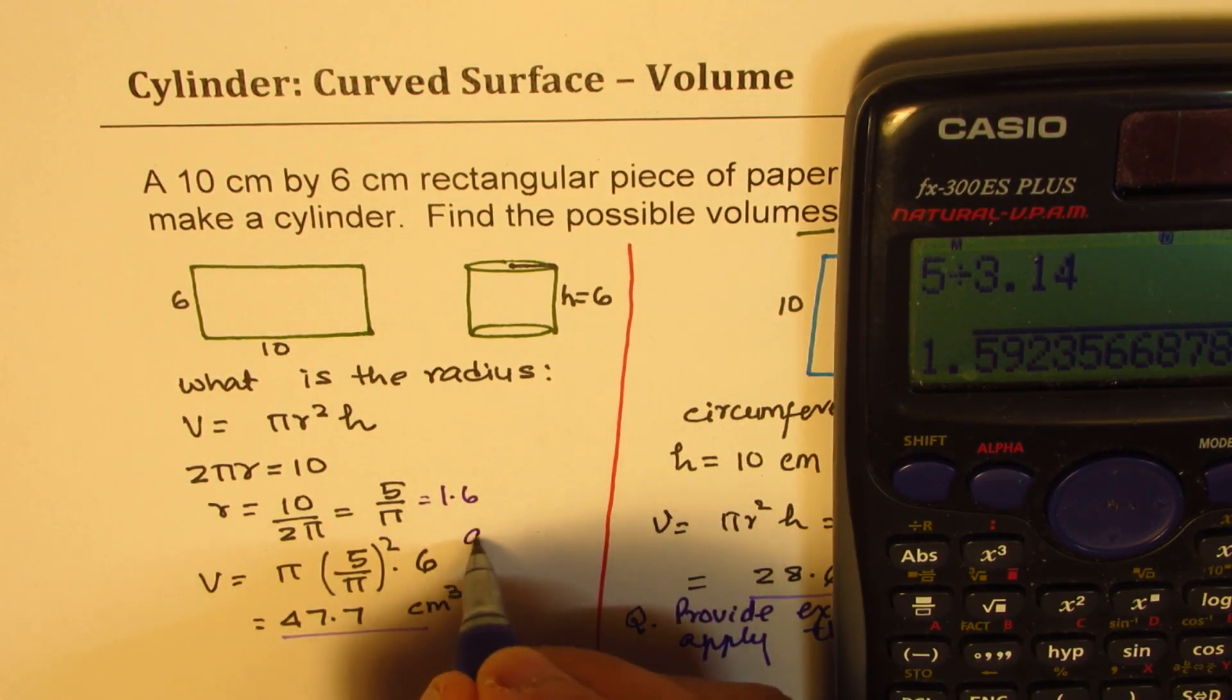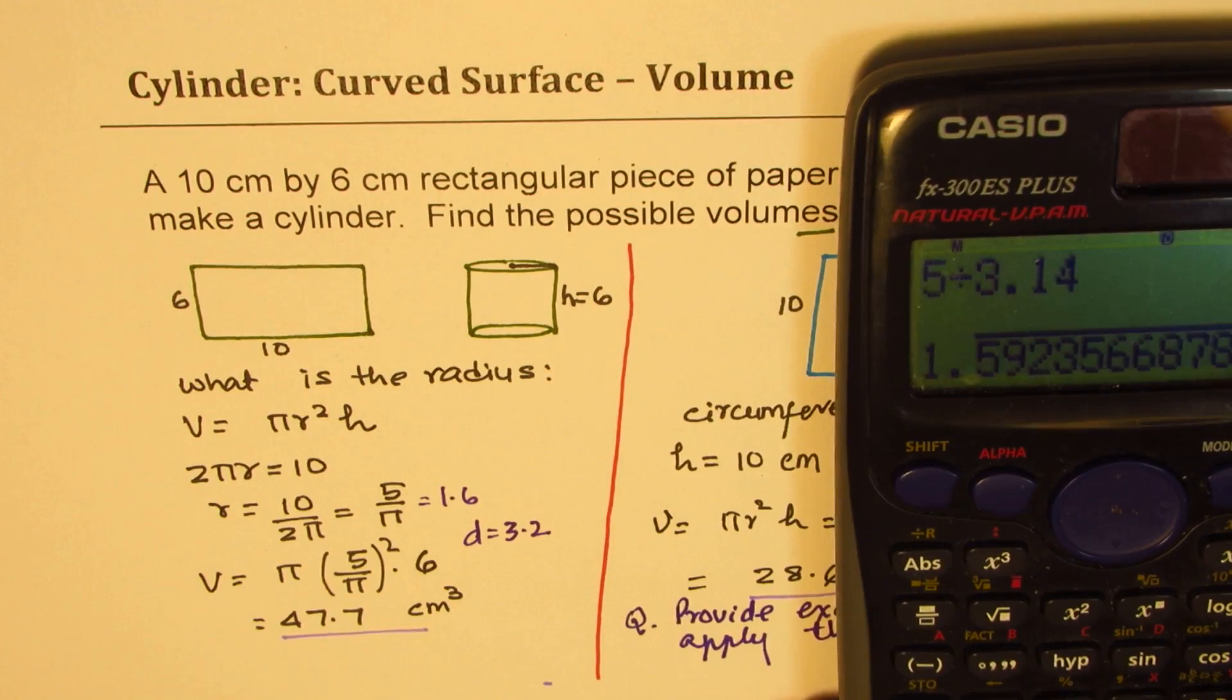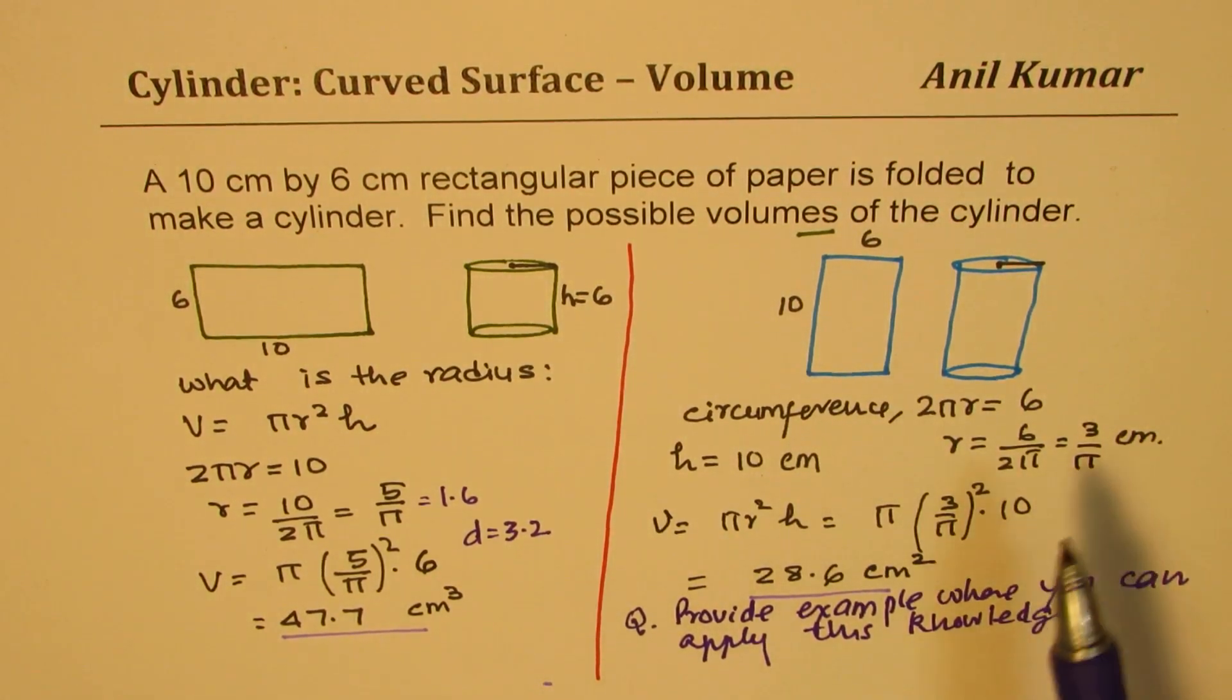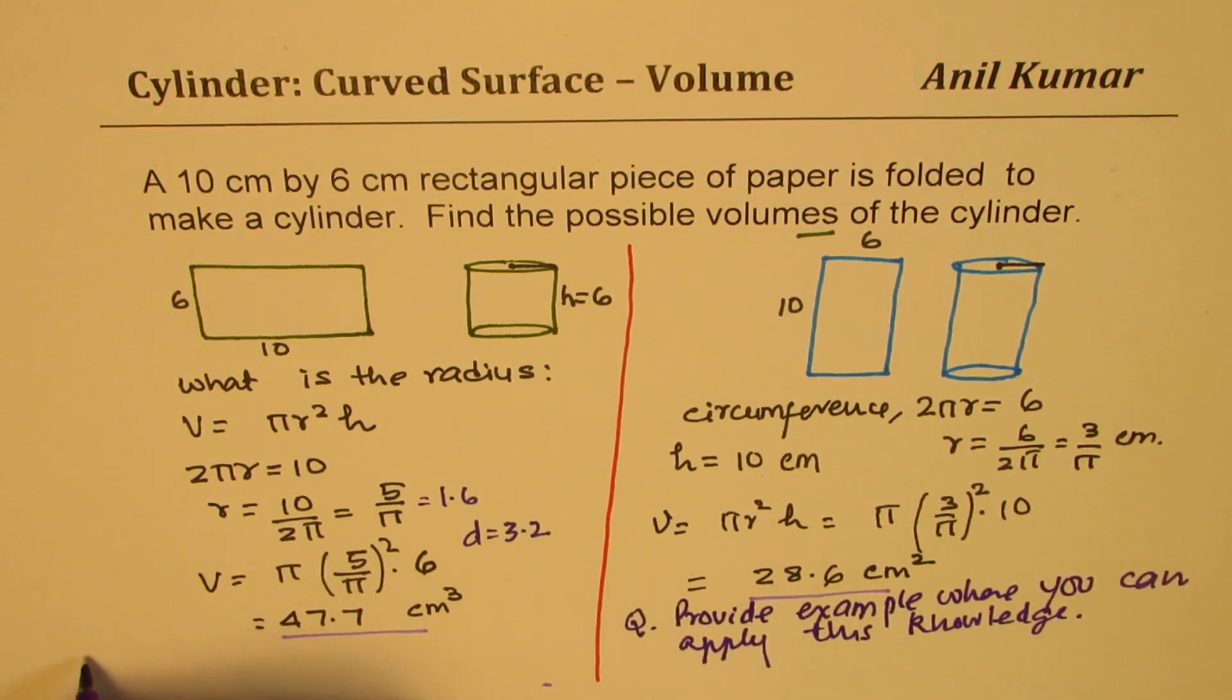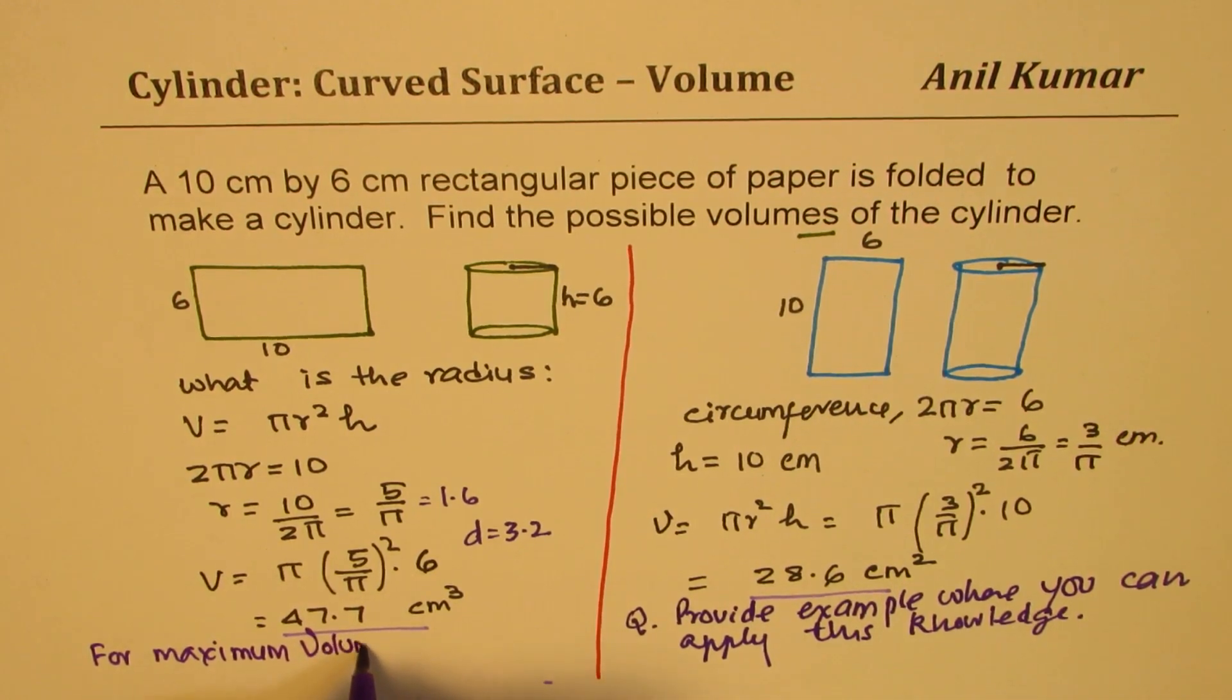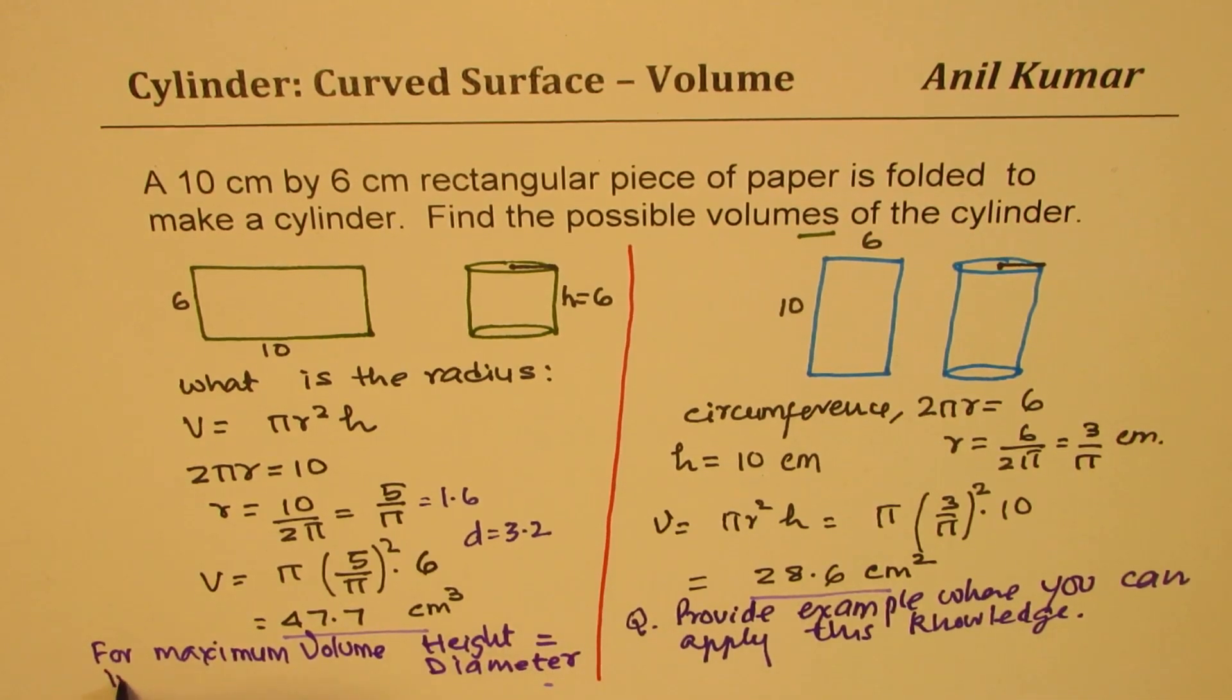So in this case, the diameter is 3.2. Now, in this case, instead of 5, it is 3, much much lesser. So that is what you actually see. Now, here is a very important thing to remember, which will help you. And that is to say, that for maximum volume, for maximum volume, height equals to diameter in cylinders.